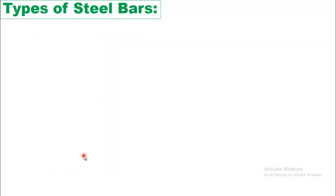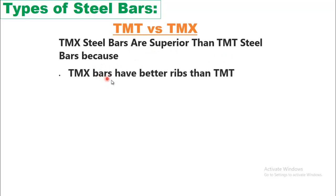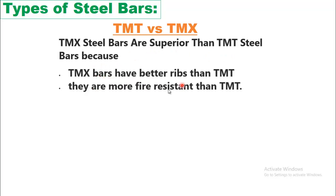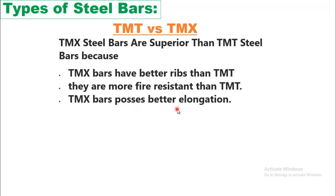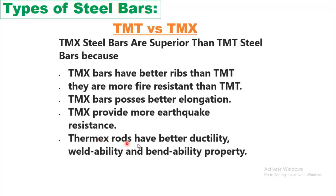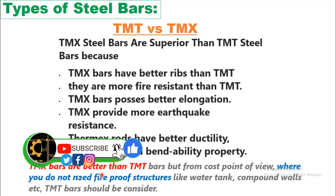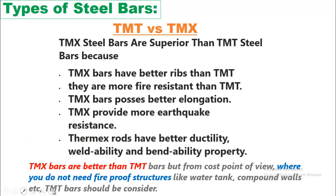Comparing TMX and TMT: TMX steel bars are superior because they have better ribs, are more fire resistant, possess better elongation, and provide more earthquake resistance. TMX rods also have better ductility, weldability, and bendability. However, from a cost perspective, where fireproof structures are not needed — such as water tanks or compound walls — TMT bars should be considered.